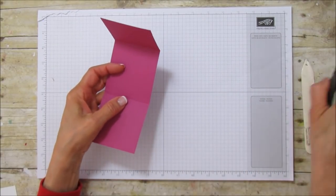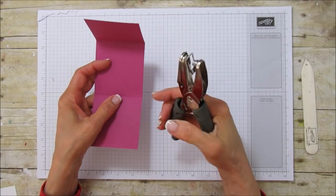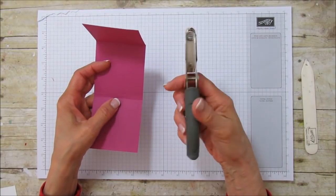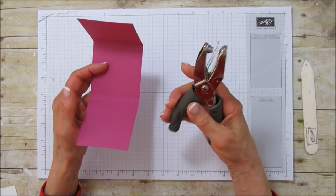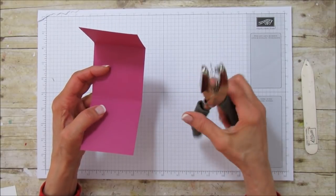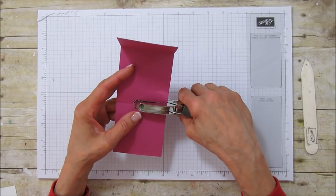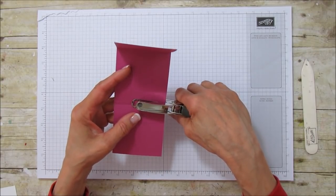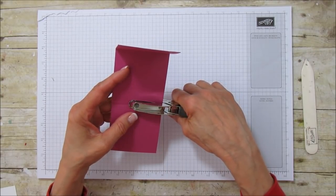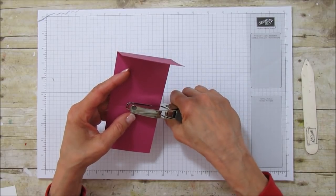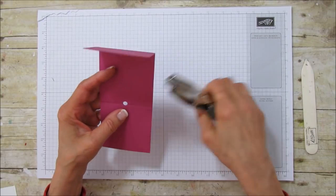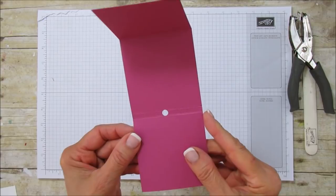And then what I'm going to do is I'm using, I believe this is our quarter inch hole punch. You can use any hole punch, it's about the size of an average hole punch. And then what you're going to do is take it all the way to the end and punch a hole between those two score marks. Can you see how that's in between those two score marks?